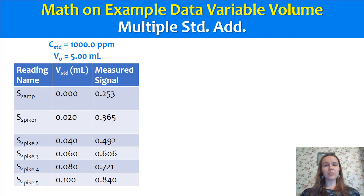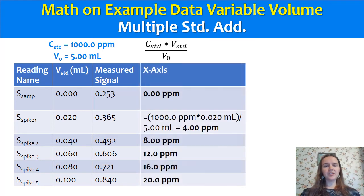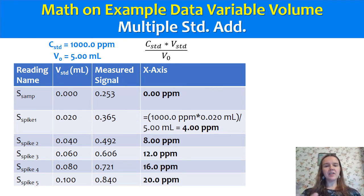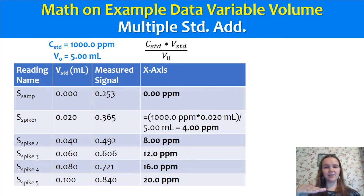For your x-axis, you take the concentration of your standard (the 1,000 ppm) times the volume of the standard at that particular sample, divided by the initial volume (the 5 mils). The original measurement with no spike — because V_standard is 0 — will be 0 ppm. The units will be the same as your standard units. For our first spike: 1,000 ppm × 0.02 mils ÷ 5 mils = 4 ppm added, considering the original volume of the sample. You carry that same calculation down the line for each addition, and this is what's plotted as the x-axis of your curve.